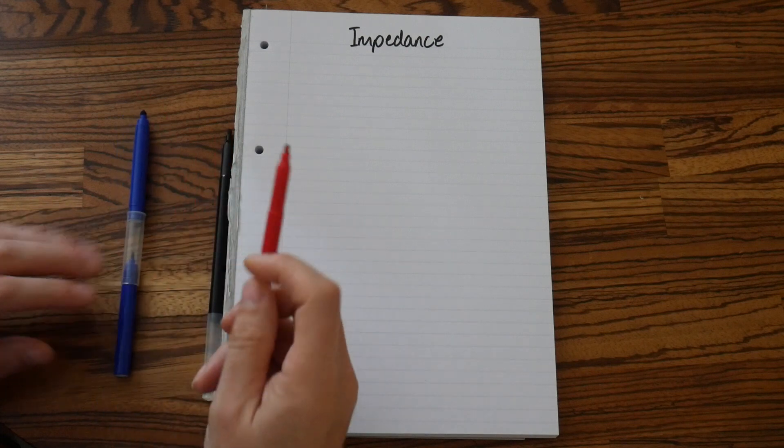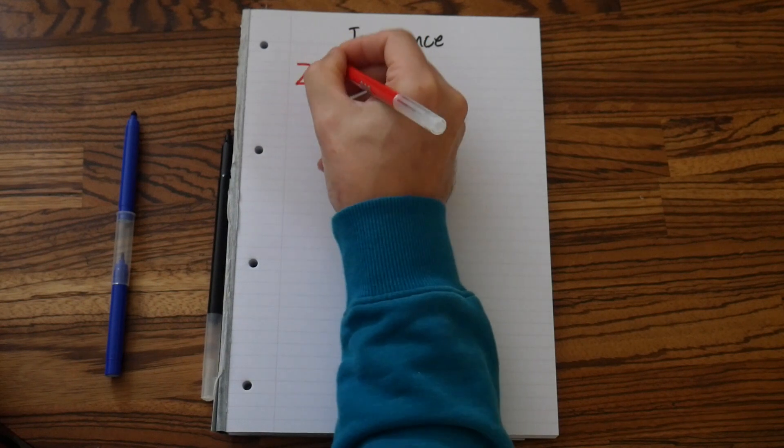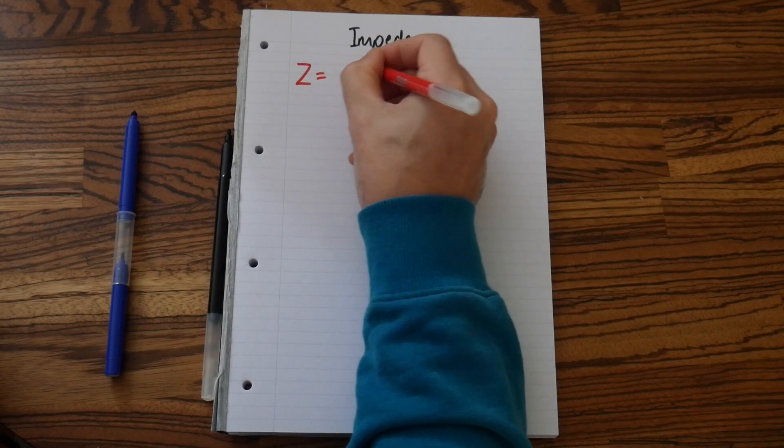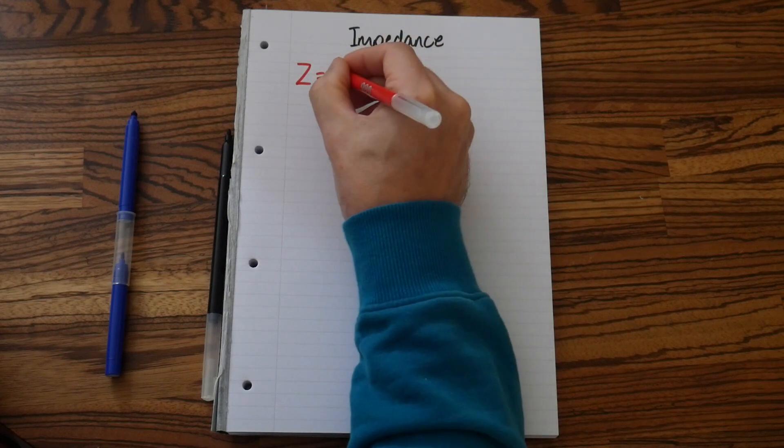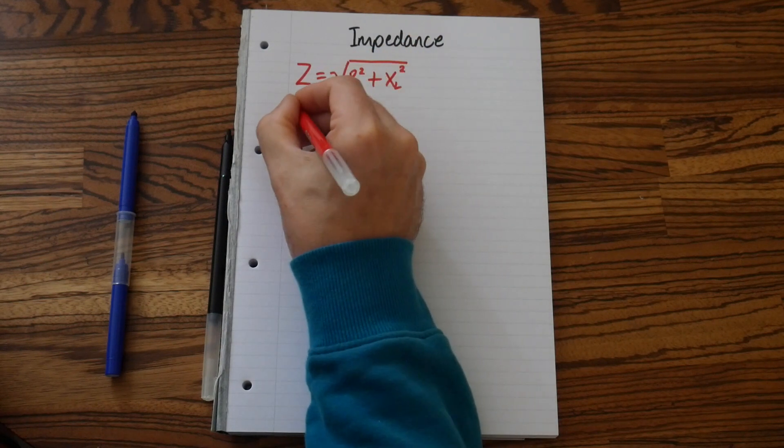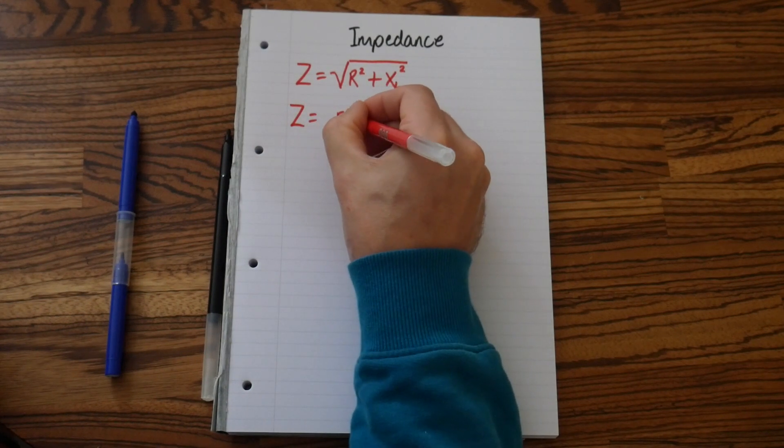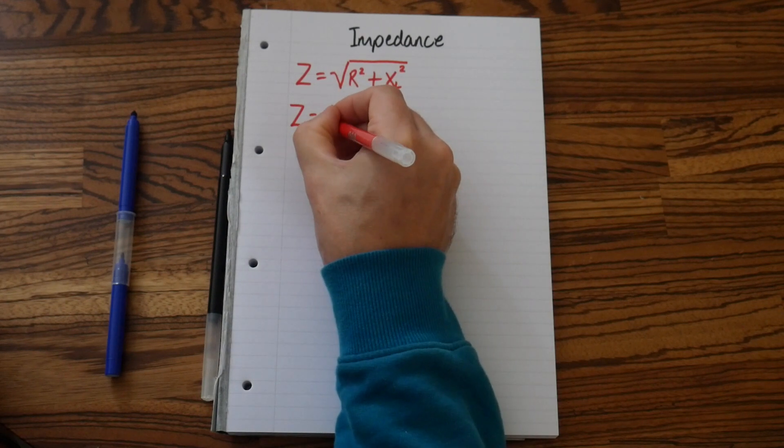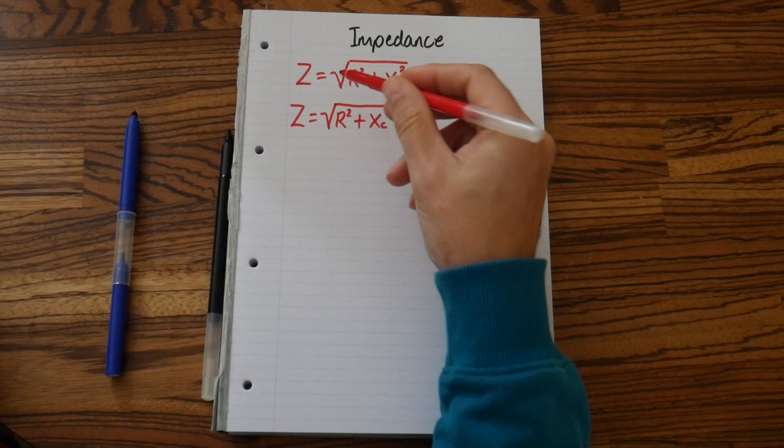Now, we've got a few formulas here. So let's make a start. We have Z equals square root of R squared plus XL squared. And we also have Z equals square root of R squared plus XC squared. Now, notice this is Pythagoras, so Pythagoras formula.